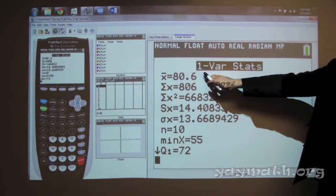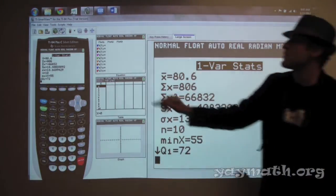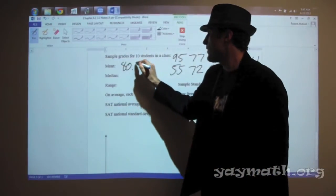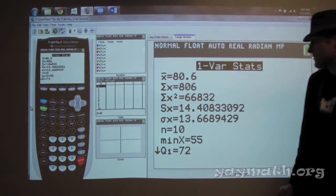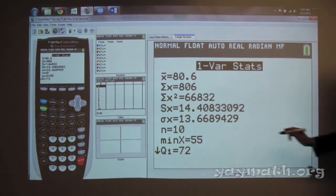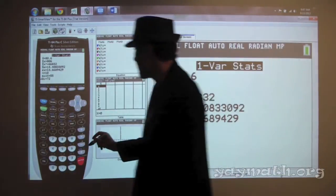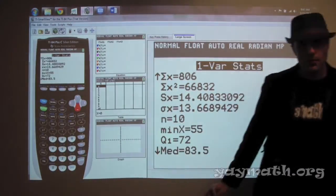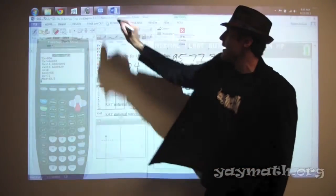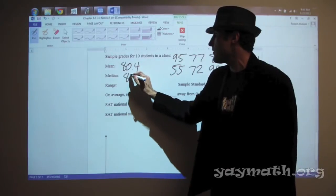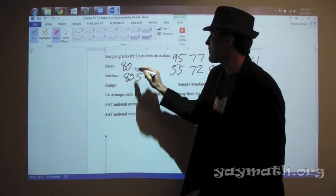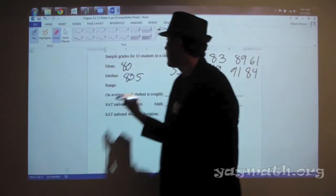Okay, and here's all our data. X bar stands for the mean. X bar stands for the sample mean. So we can put that down. Sample mean was 80.6. Median, where is it? Oh, we can go down. There it is. Median, 83.5.